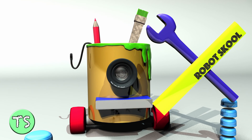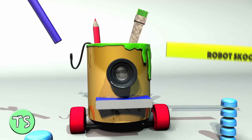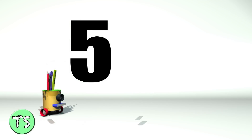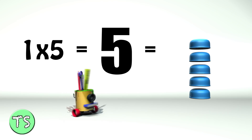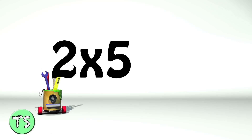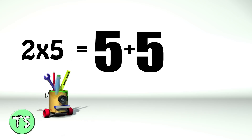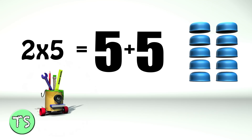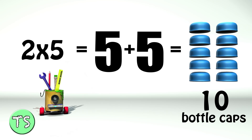Multiplication is repeated addition. Let's take the number 5. 1 times 5 is just 5. 2 times 5 — we write 2x5 — this is 5 plus 5, which equals 10 bottle caps.